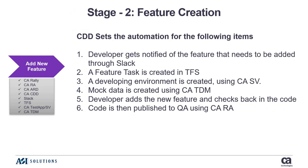Then it gets to the developers. We're going to contact developers through Slack. Our feature is going to be created as a task in TFS, and then the development environment is going to be created — probably in a modern world using Docker, but not everybody is on Docker yet. All these products support Docker and Kubernetes. We're going to spin up the environment, create some mock data created by TDM. The developers add the new features through their code of choice — in this case TFS and Visual Studio — then check it back in. Once it's checked in, it moves to QA and then uses release automation.